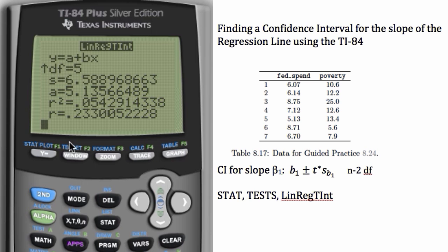If we go down, we also get R squared, the explained variance, and R, the correlation coefficient.